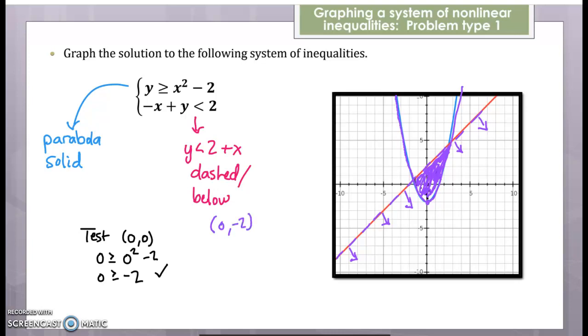Let's see if it works and is true for both inequalities. The first one, y is negative 2, is that greater than or equal to 0 squared minus 2? Well that's negative 2 greater than or equal to negative 2, so yes, that works. What about for the line portion? Is negative 0 plus negative 2 less than 2? Well, negative 0 plus negative 2 is just negative 2 less than 2. Yes, that's a true statement. So I know that this is the region that will work.